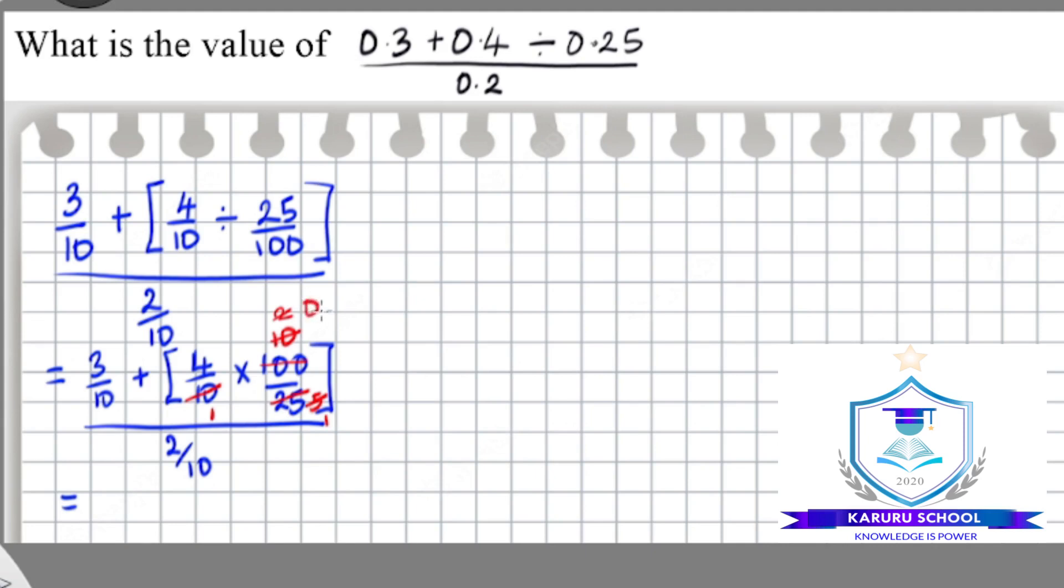So simplifying this expression further, we will get 3 over 10 plus open the brackets we have 4 multiplied by 0.4, which can be written as 4 over 10, all these divide by 2 over 10.